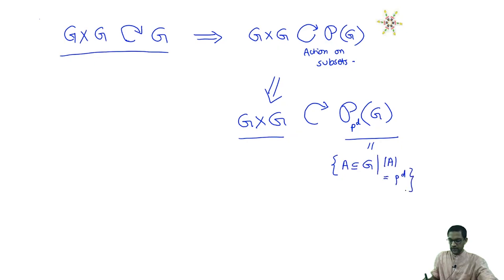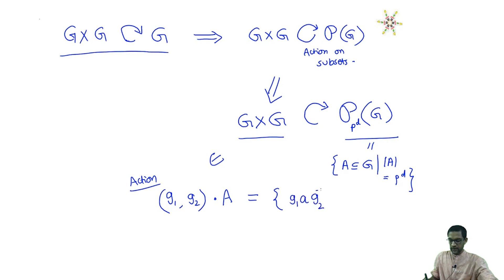Let us recall what that action is. If I give a pair (G1, G2) in G×G, its action on a subset A gives a new subset: take every element a of A and apply the two-sided action to it, giving G1·a·G2 inverse for every a in A. The collection of all such elements is another subset of cardinality P^D, and that is what the action maps A to.